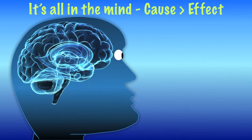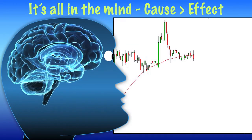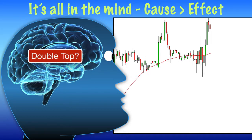Let me give you an example. Take a double top. We see the market making a high, it pulls back a bit, and then we see it make another similar high and pull back slightly. This is now our window of opportunity. If the top's in the right context and it looks like a double top, then we must take the trade.